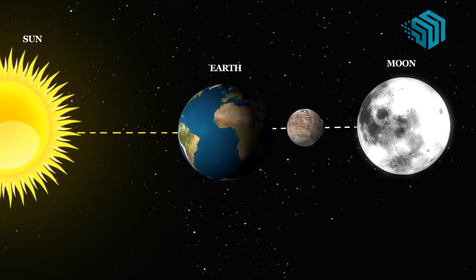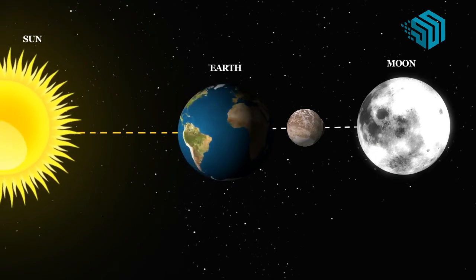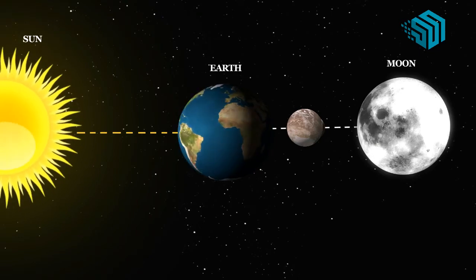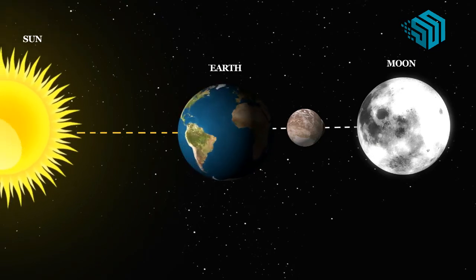We also know that the moon does not have its own light, rather it reflects the sunlight, so the sunlit portion of the moon is visible to us.